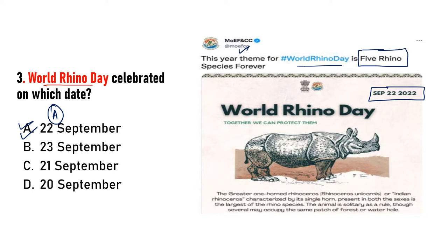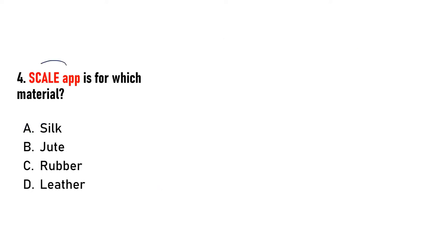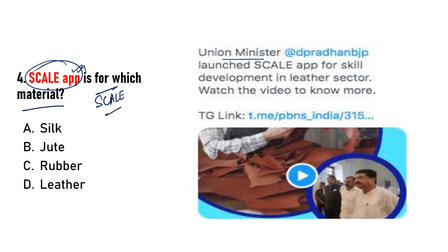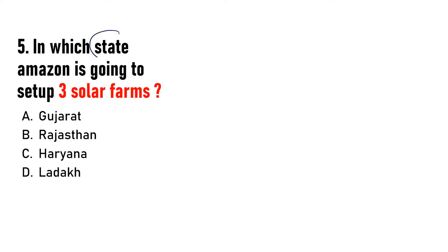Next: SCALE app kis material ko flourish karne, yaani increase karne ke liye ek app hai. Iska full form bhi hoga. Options: silk, jute, rubber, ya leather. Answer will be D — SCALE app ko launch kiya gaya skill development ke liye leather sector mein.